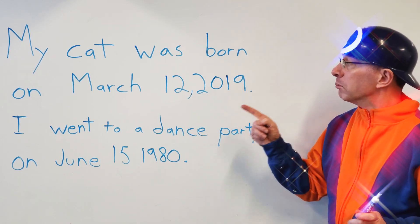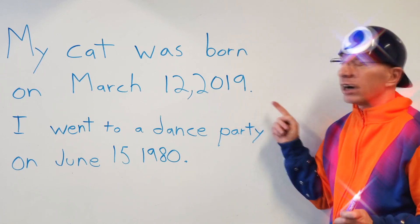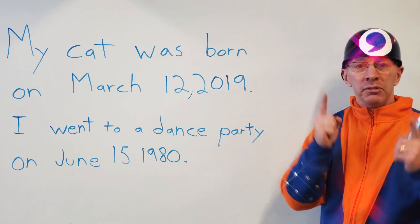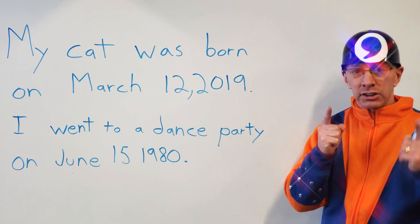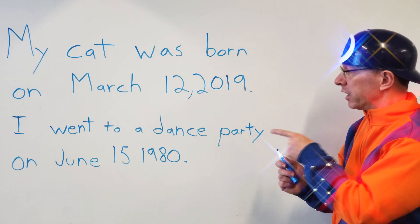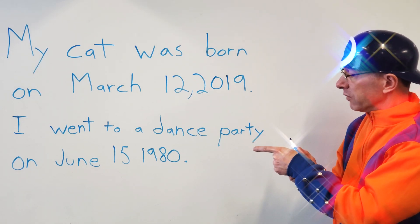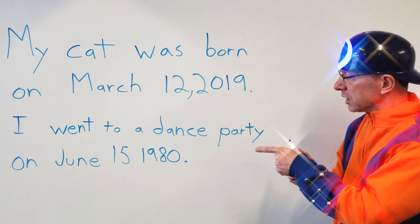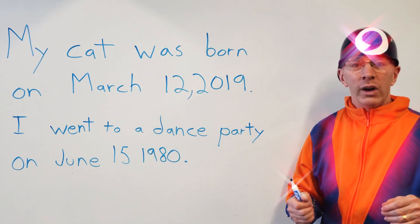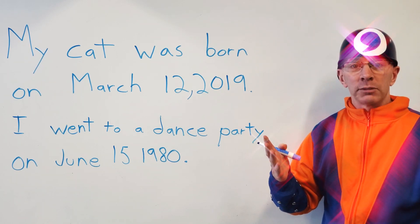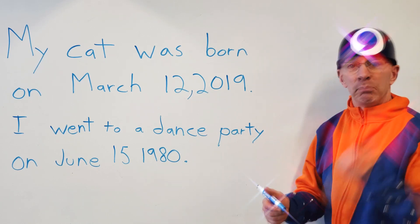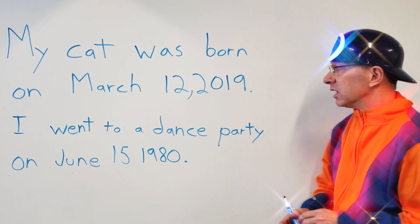Now I can read the sentence and it should make sense: 'My cat was born on March 12, 2019.' Totally makes sense! All right, next sentence — let's do it. 'I went to a dance party on June 15 1900.' Whoa, that's way in the future!